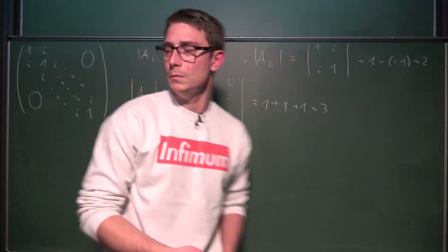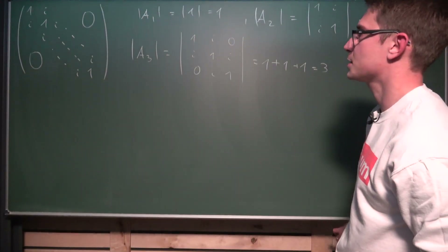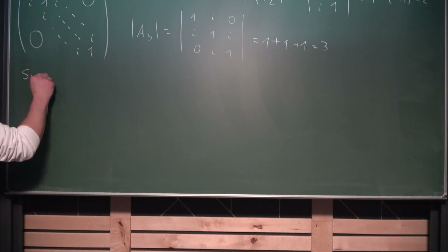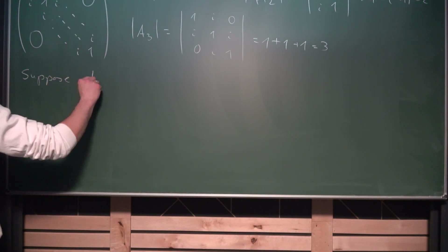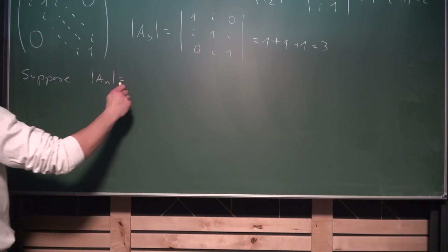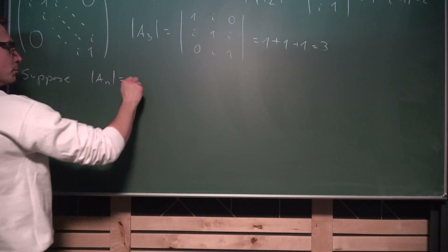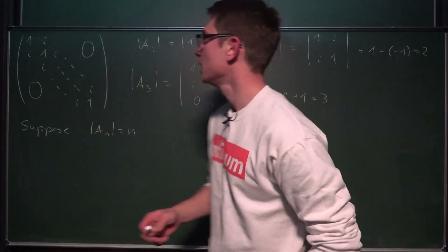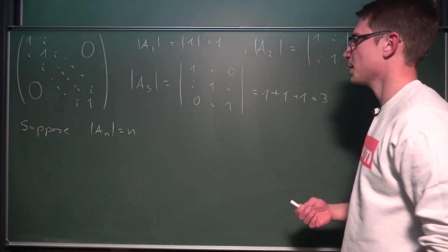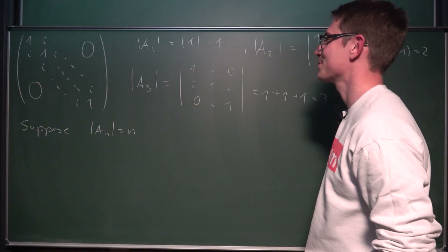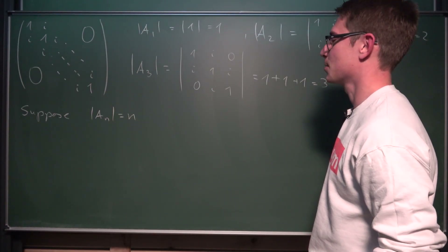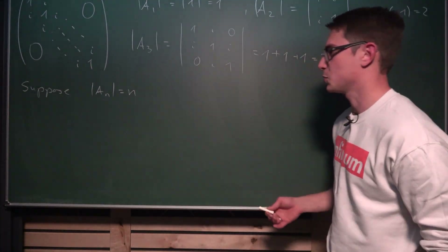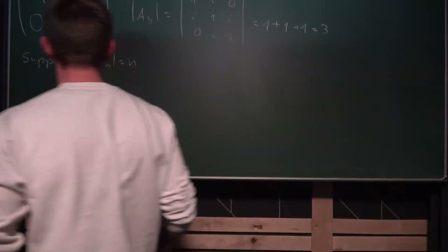So I think I have an induction hypothesis here. We are going to suppose that the determinant of An is equal to n. I think this is the best guess we can have right now. That is very cool — a generating matrix for natural numbers, like a counting matrix if you take the determinant. So we suppose the determinant of An equals n, and now we are going to do the induction step.